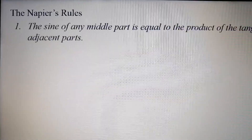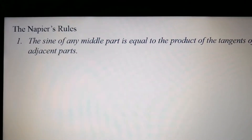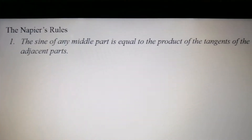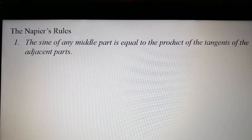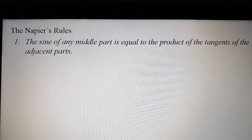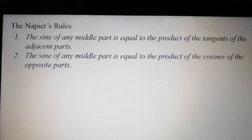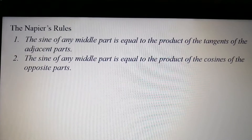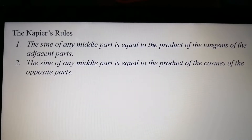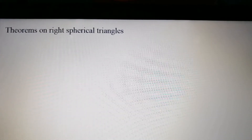So what are Napier's Rules? Napier's Rules state: first, the sine of any middle part is equal to the product of the tangents of the adjacent parts. The second Napier's Rule is that the sine of any middle part is equal to the product of the cosines of the opposite parts.